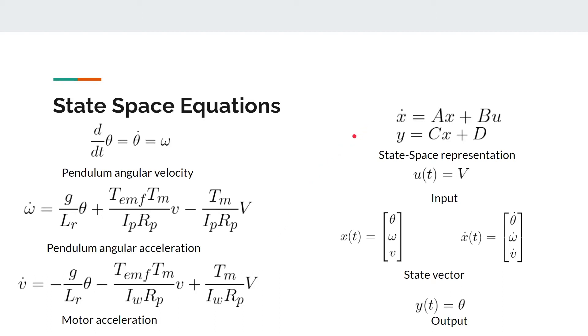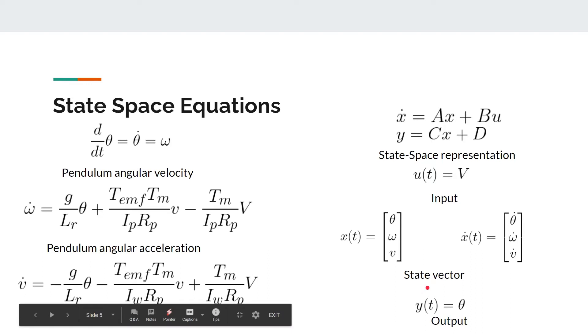Over here is the state space representation. U of T is our input, which is also the input voltage for the motor. Over here is our state vector, theta, omega, and V. Theta is our pendulum angle. Omega is the pendulum angular velocity and V is the motor speed. And over here is our output, Y of T equals to theta.